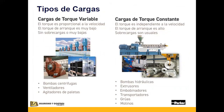Los variadores se pueden separar dependiendo del tipo de carga. Para cargas de torque variable, el torque es proporcional a la velocidad y el torque de arranque siempre va a ser muy bajo. Pueden ser usados para bombas centrífugas, ventiladores o agitadores de paleta. Para torque constante, el torque es independiente a la velocidad, el torque de arranque es alto y las sobrecargas son muy usuales. Estas aplicaciones se pueden conseguir en bombas hidráulicas, extrusores, bobinadores, transportadores, grúas y molinos.